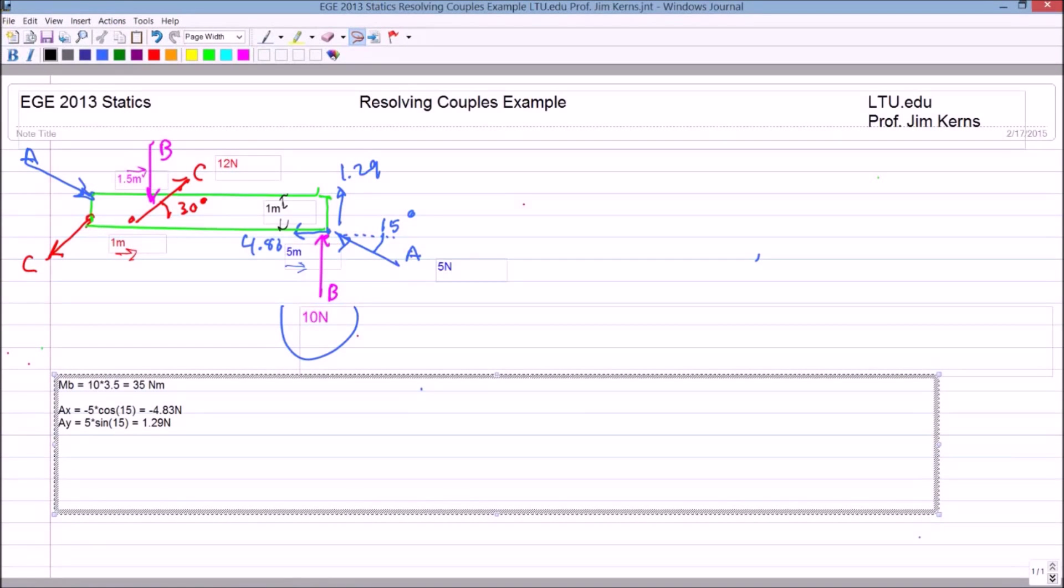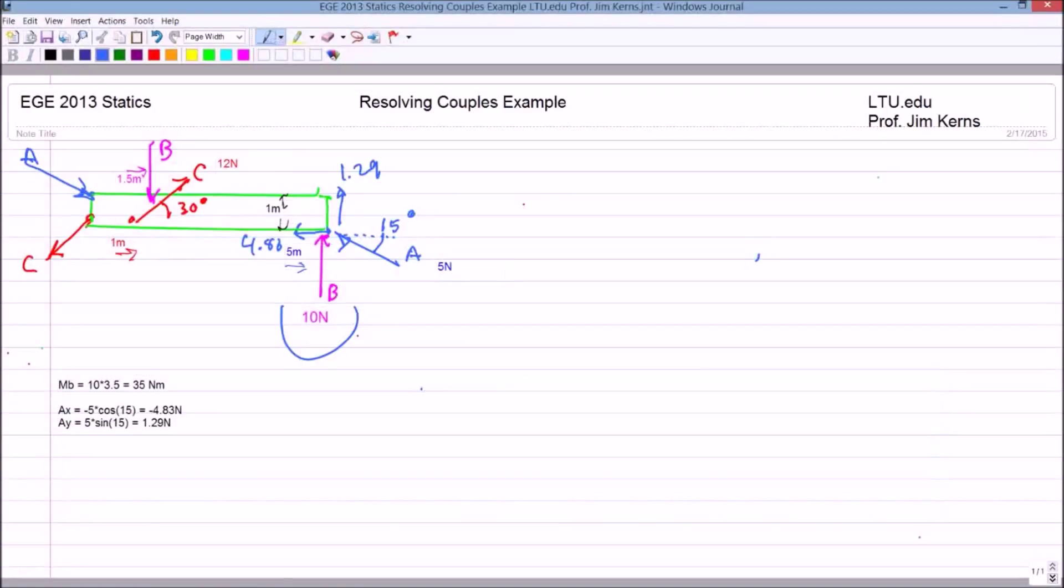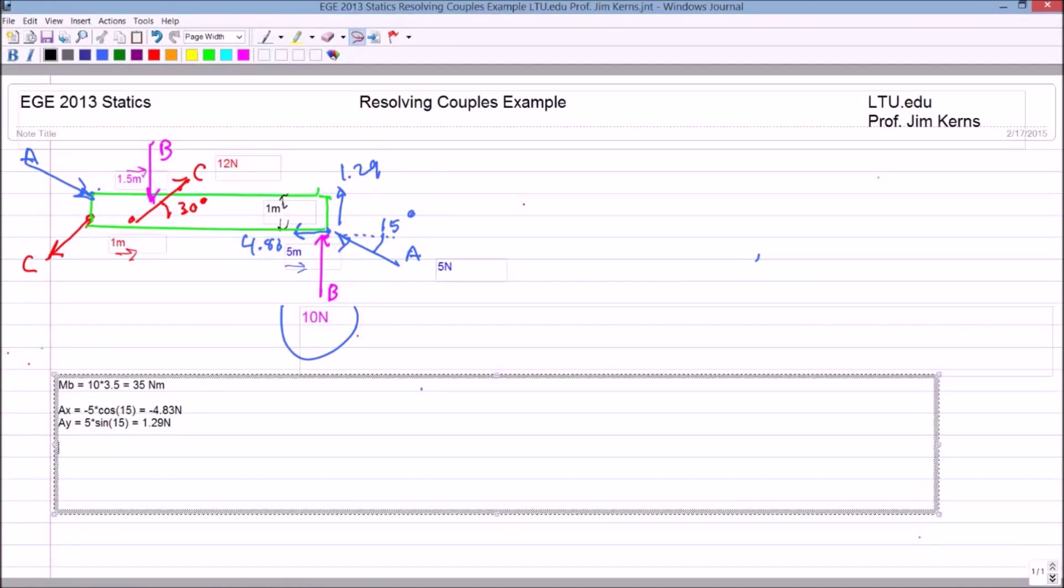So looking at the X component, I have the 4.83 newtons as the force, the distance between the two X components, if I were to extend those, and let me draw those here, the difference between that line and this line is one meter. Okay, given the distance of one meter and that force, my moment in the X direction from A vector is going to be equal to that one meter times the 4.83.